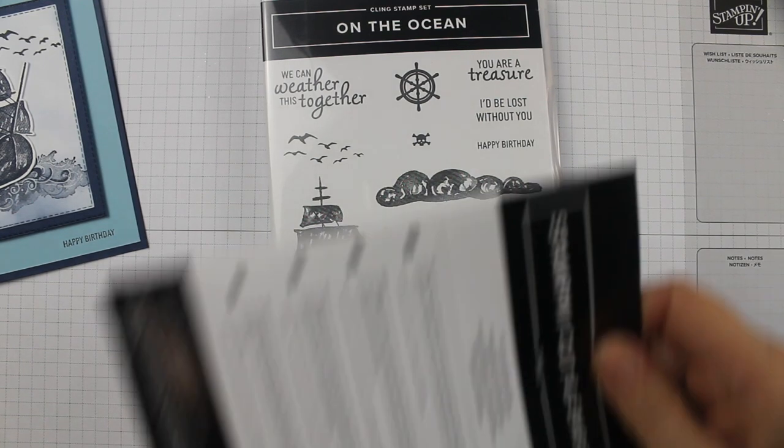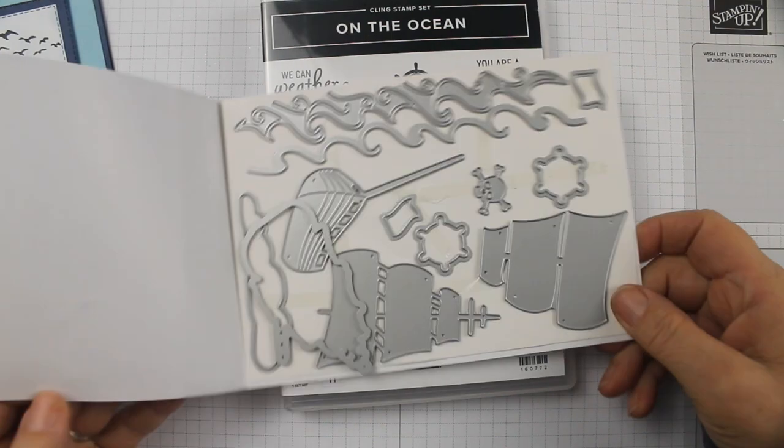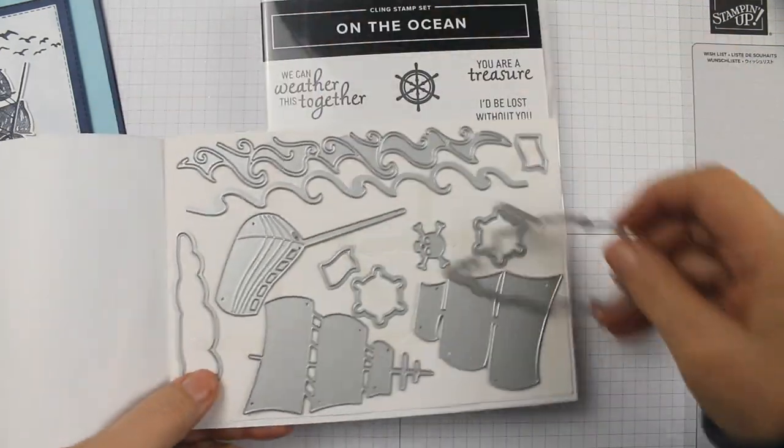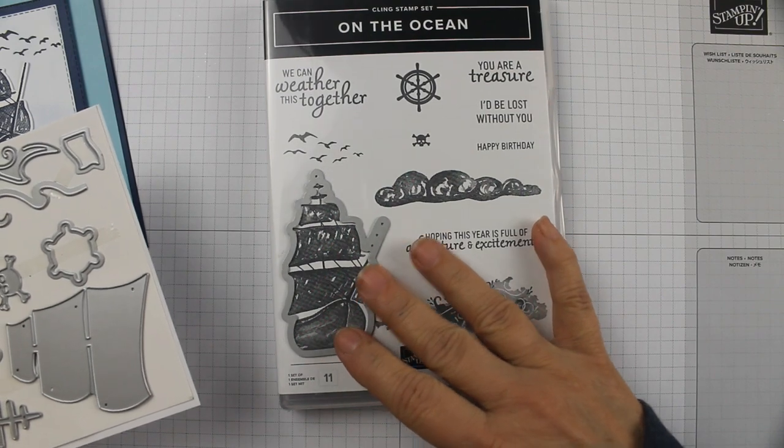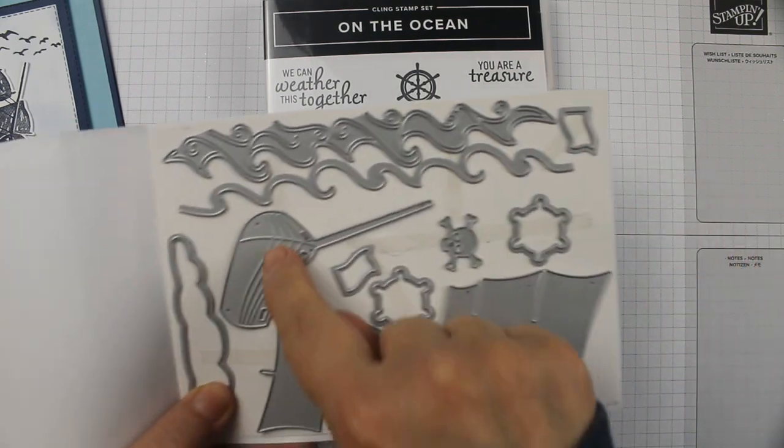And then you have another ship that you can cut out. It's a little bigger than this that you can just cut out of cardstock. This little piece will cut out a little cloud. This stamps wonderfully, I'll show you that here in just a minute.